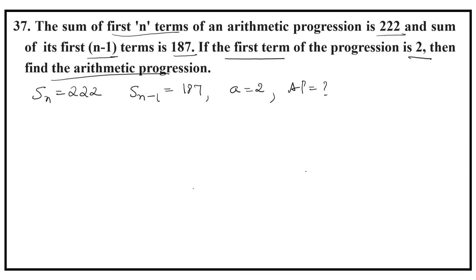To find the arithmetic progression, a is given, but d is not given. So we have to find d. In order to find d, we should know n also. But we don't know n. The last term is also not given, so we have to find either the last term or the number of terms n.